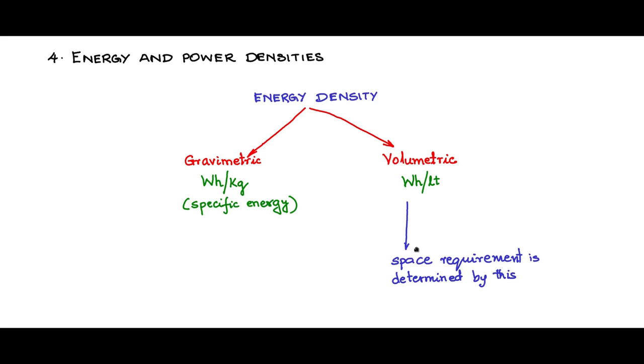Gravimetric energy density has a lot of significance on mobile platforms. On static platforms, the weight doesn't play that much of a role as the space. So the gravimetric energy density is used more in mobile platforms like, for example, electric vehicles and hybrid electric vehicles, EVs and HEVs.